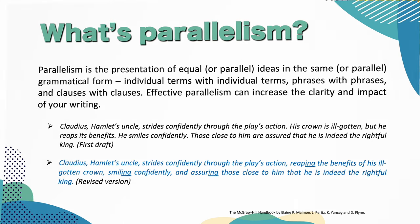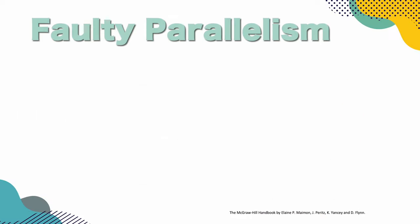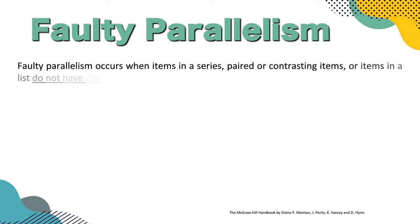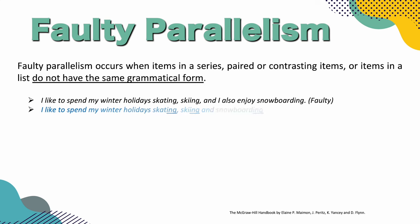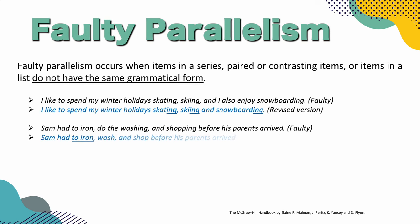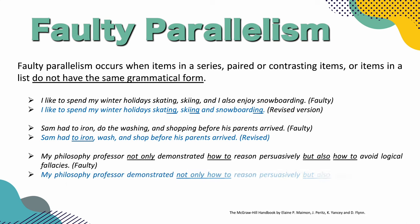Let's take a look at our next case: faulty parallelism. Faulty parallelism occurs when items in a series, paired or contrasting items in a list do not have the same grammatical form. So for example: I like to spend my winter holidays skating, skiing, and I also enjoy snowboarding.